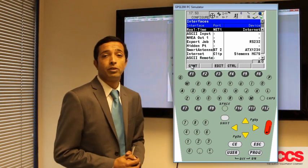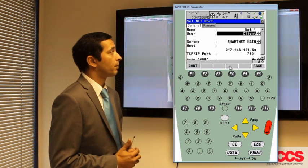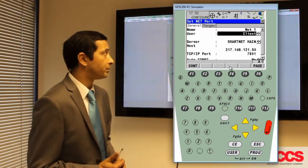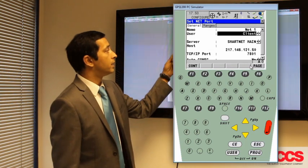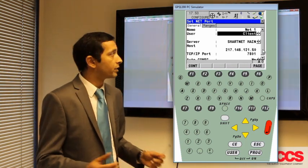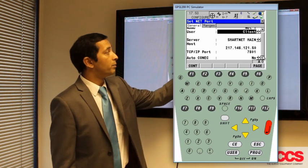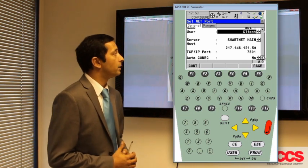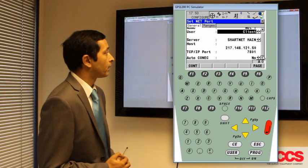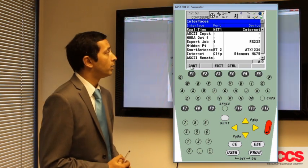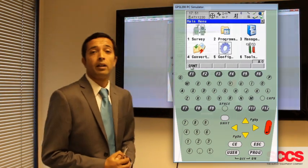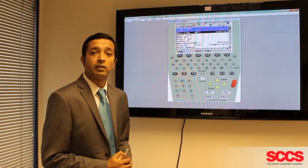Now we've looked at all those pages, what we're going to do is press control and this gives us our server details. So you're expecting to see a server name, smartnet or something similar, and the following numbers for the host address and the TCP IP port. If they're correct, then you can continue and that is your NTRIP and server settings checked.